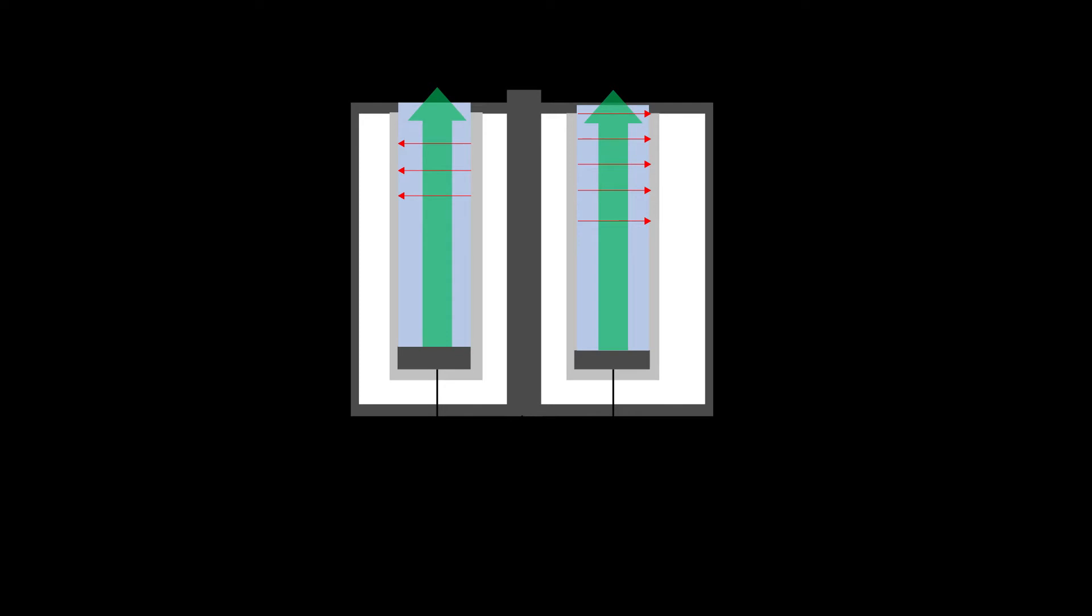The Hall Thruster has an axial electric field shown by the green arrows. Electrons born at the cathode travel up the green arrow towards the positive anode. We apply this red magnetic field in the radial direction to trap the electrons along these field lines so it takes them much longer to reach the anodes. This improves efficiency and is fundamental to the operation of these devices.